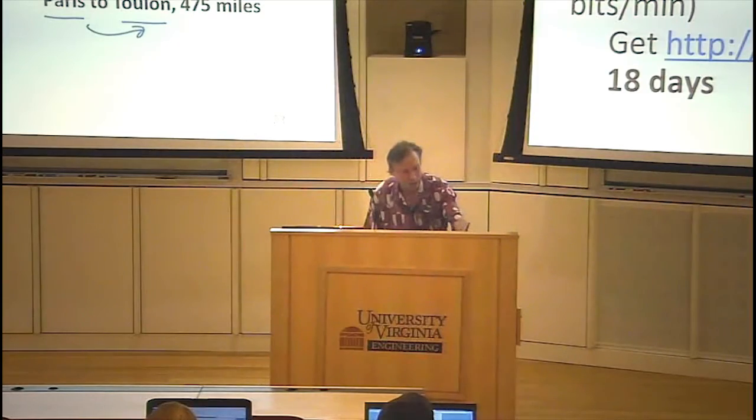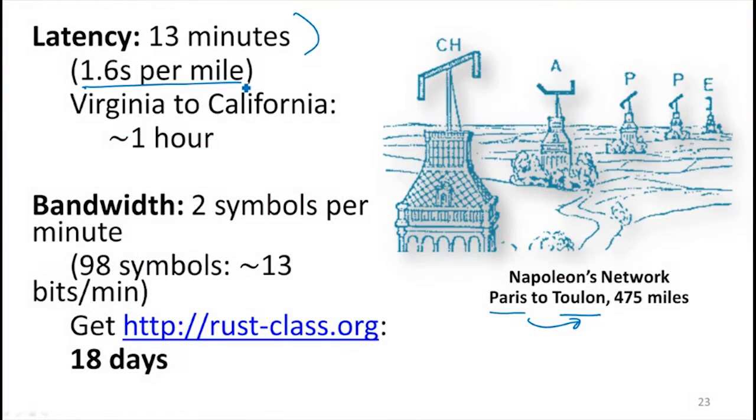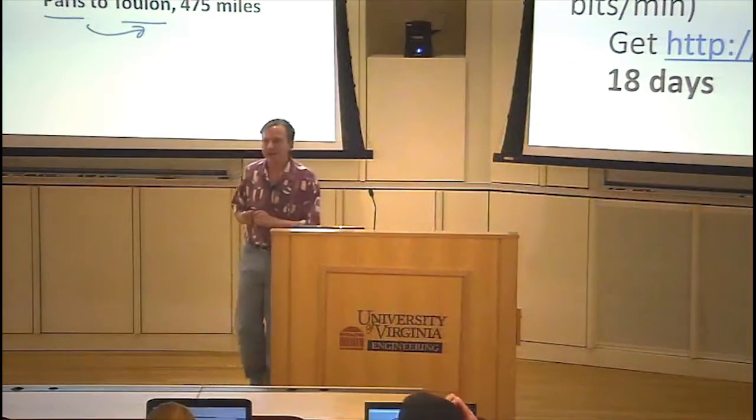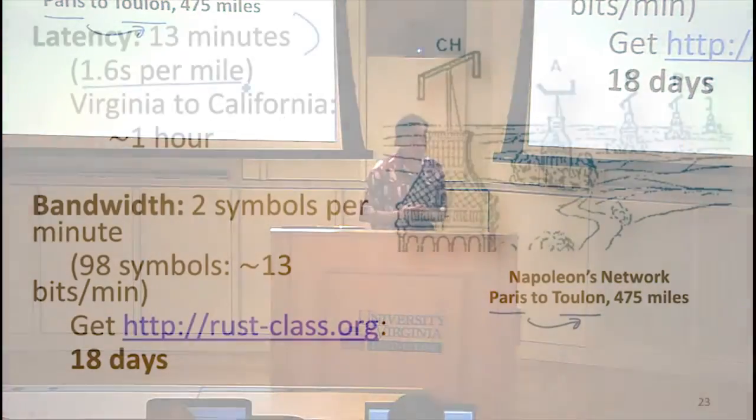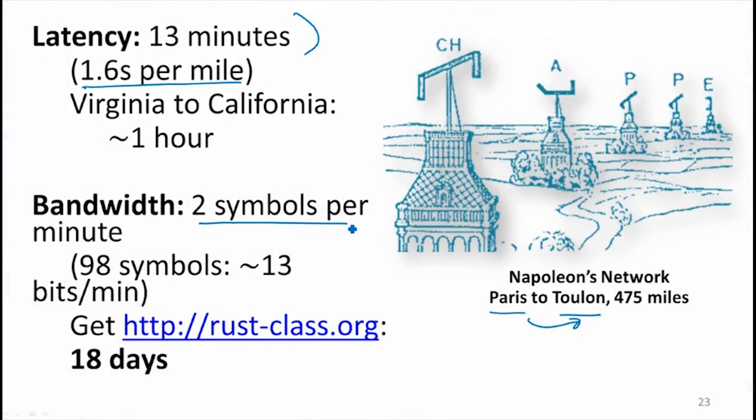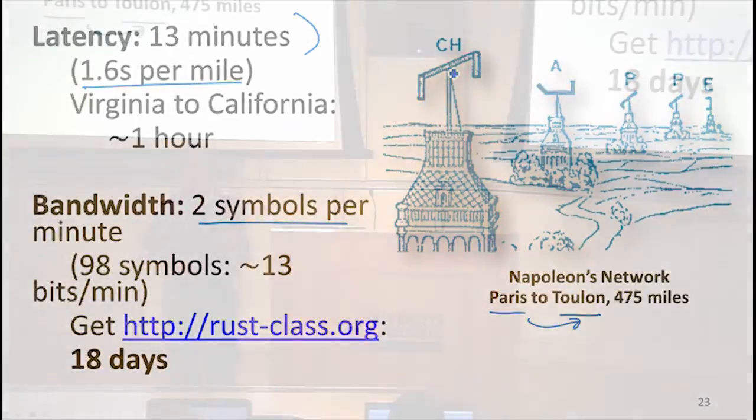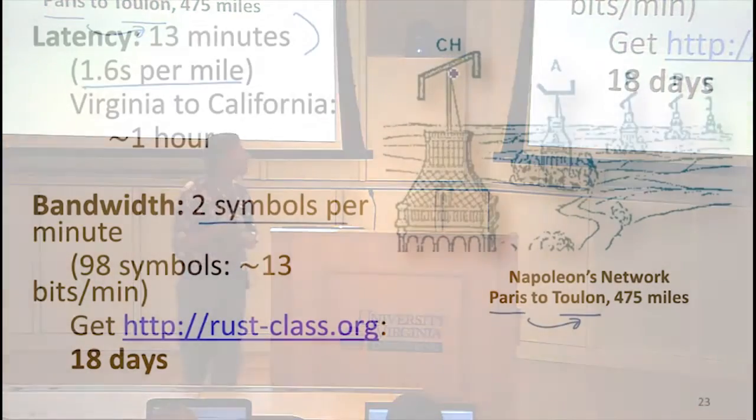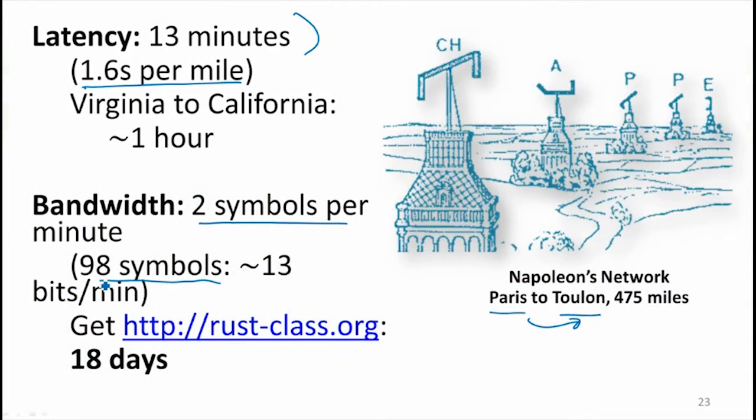So it's going through these towers. It takes 13 minutes. That's a rate of 1.6 seconds per mile, which for the 1800s is actually pretty good. It would make us pretty unhappy if it took an hour to send a message to California today. The bandwidth is determined by how many symbols can you send per minute. That's about two per minute. So it takes time for the operators to move those arms, and then you've got to wait until the person at the next tower sees it. That means the bandwidth you're getting depends on how much information you can convey. There are 98 different symbols. So it's going to take about 18 days to download the course site.